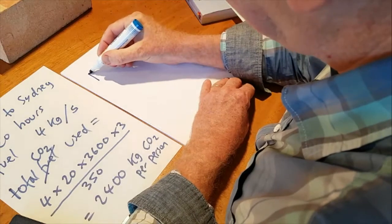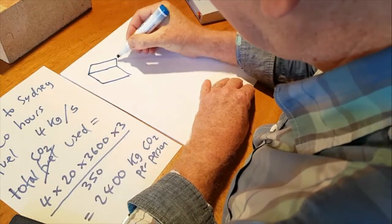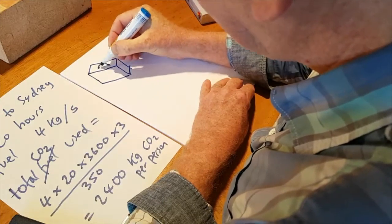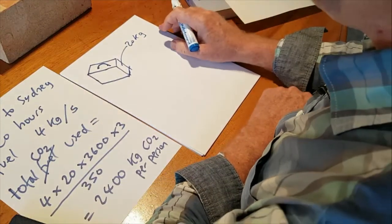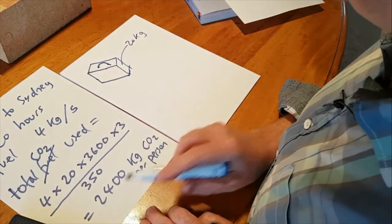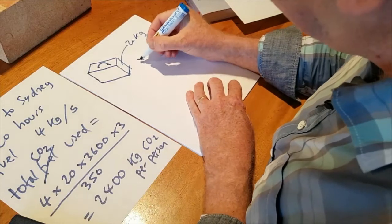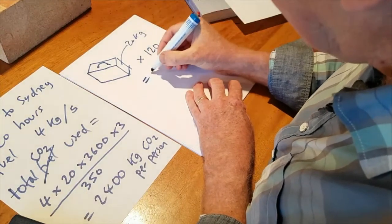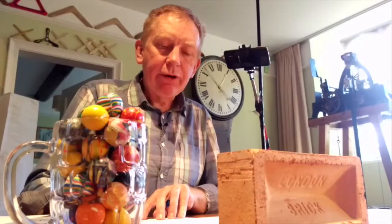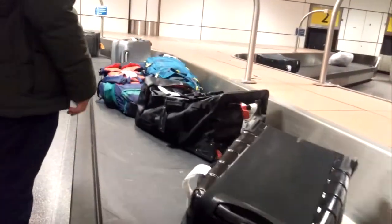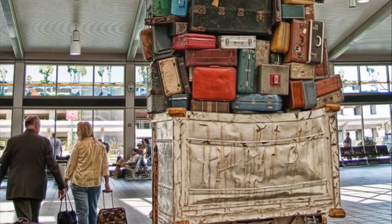Let's imagine a suitcase. We go onto the plane with our favourite suitcase and it weighs 20 kilograms. How many suitcases do we need to get up to 2,400 kilograms? We need 120. So just imagine you arrive at Sydney airport, go to the carousel to pick up your one and only 20-kilogram suitcase, and you get a little tap on the shoulder saying, 'Hey mate, you've got to pick up your waste.'